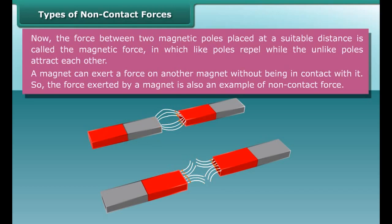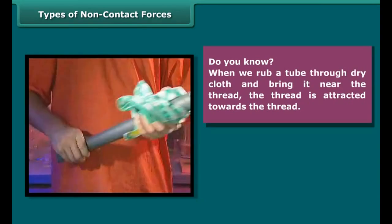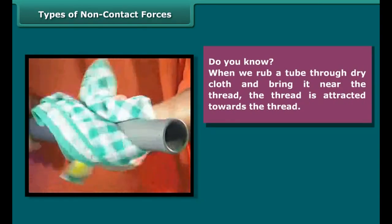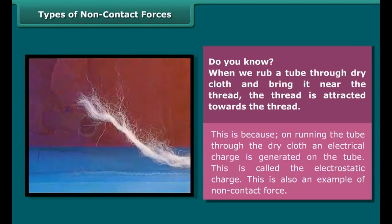This is an example of non-contact force. Now the force between two magnetic poles placed at a suitable distance is called the magnetic force, in which like poles repel while the unlike poles attract each other.